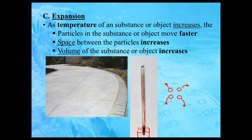Here's another example. You may have noticed that sidewalks have little tiny gaps between the blocks. There is an important reason for this. If you go from winter to summer, the average temperature is obviously going to be a lot warmer. The particles that make up the concrete would start to move faster; if they move faster, there's going to be more space between the particles, and the volume of the concrete is going to increase. Those little gaps give room for the sidewalk to expand into when the temperature increases.